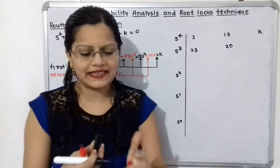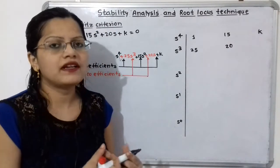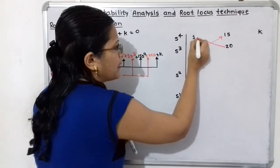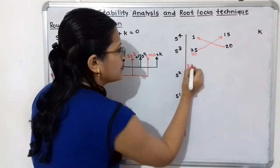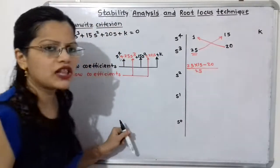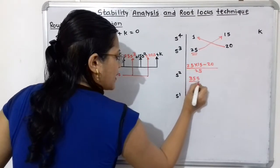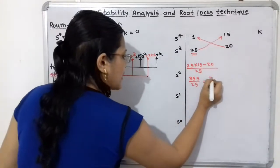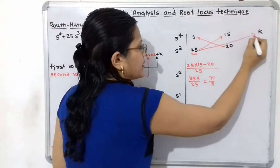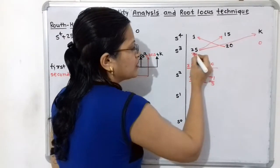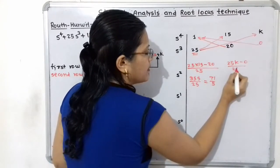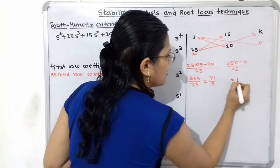Now we will move to calculations for the next row. So: 25 multiplied by 15 minus 20 multiplied by 1, divided by 25. That gives 375 minus 20 over 25, which equals 355 divided by 25, simplified to 71 by 5. For the next element: 25 into K minus 1 into 0, divided by 25. So 25K divided by 25 — the 25 cancels — leaving only K.